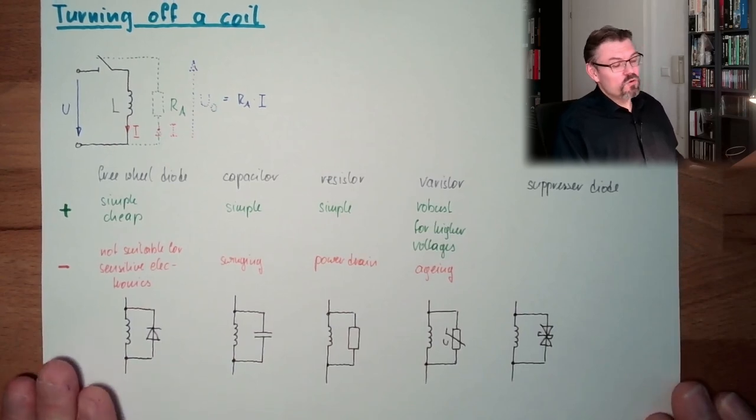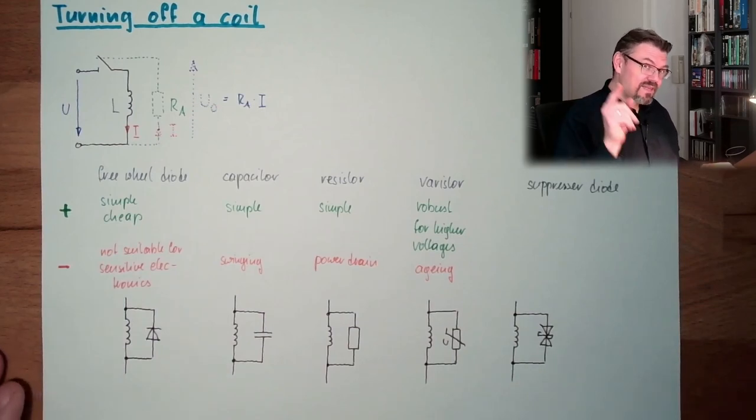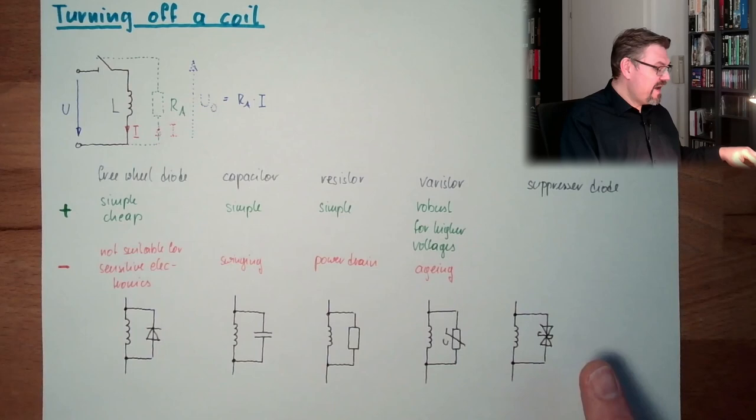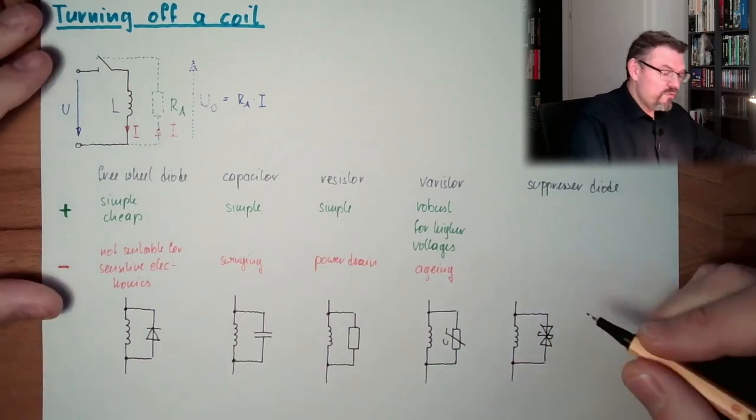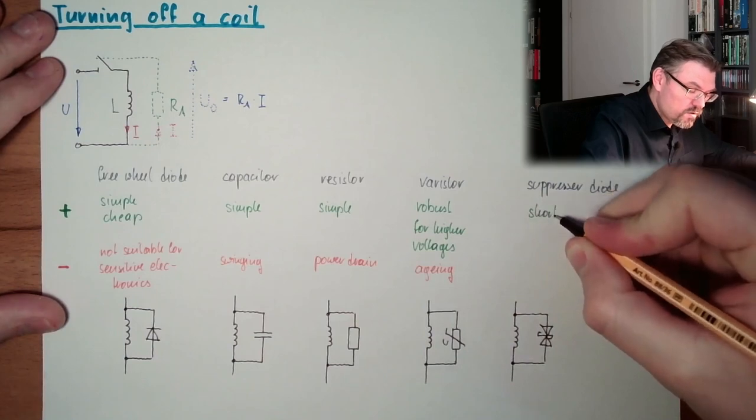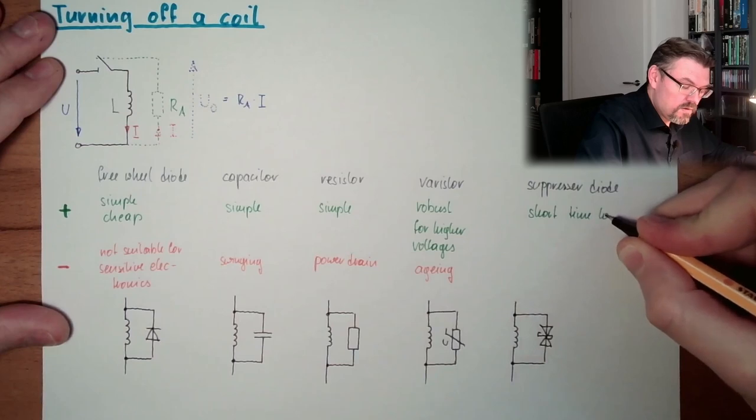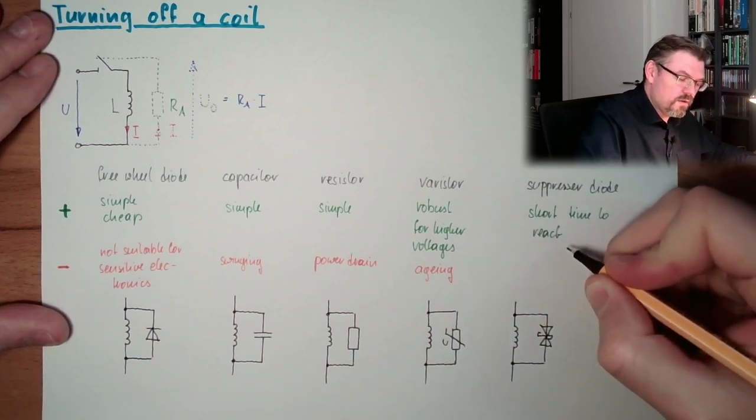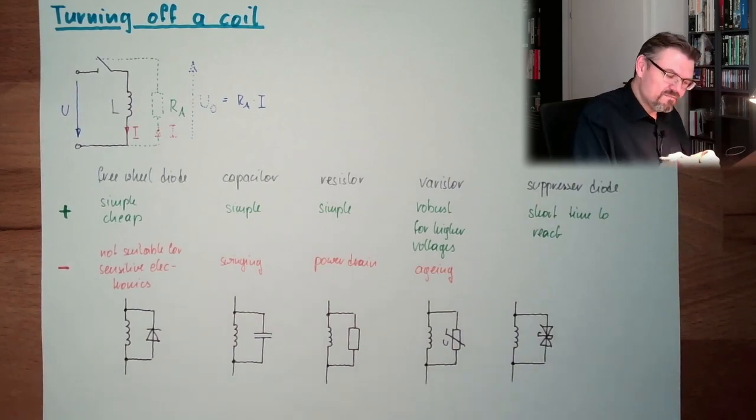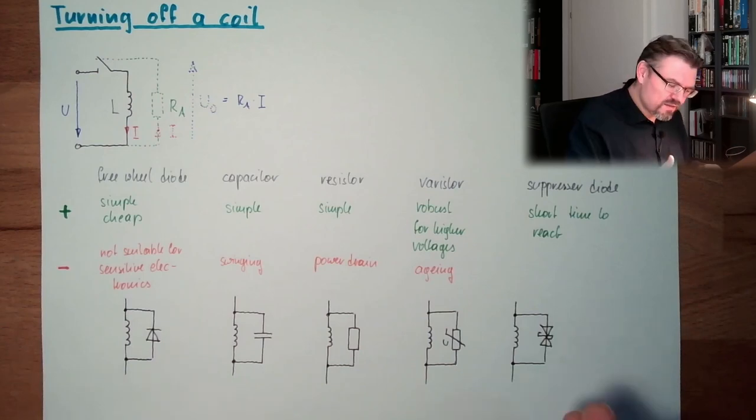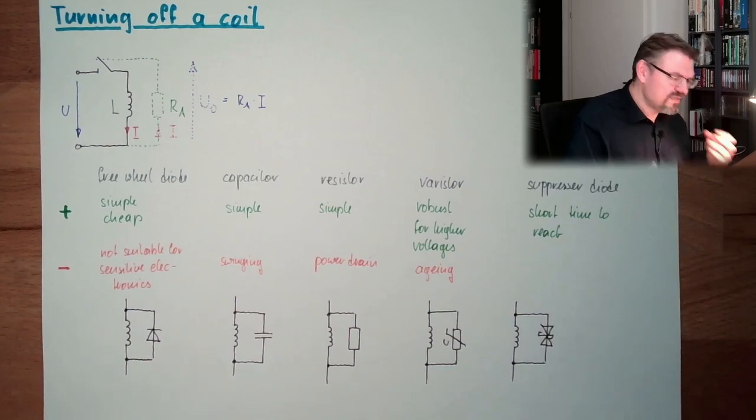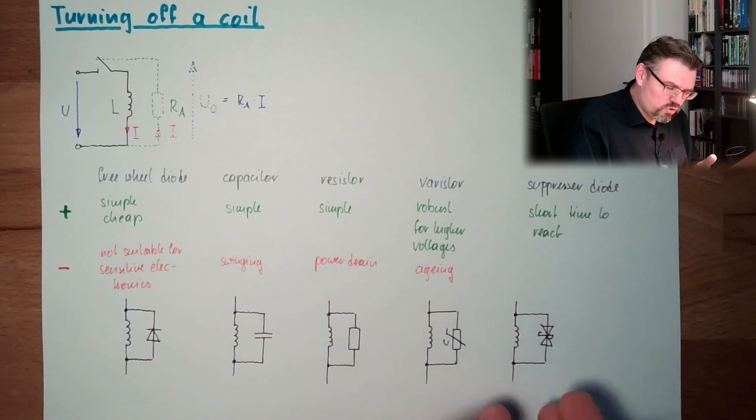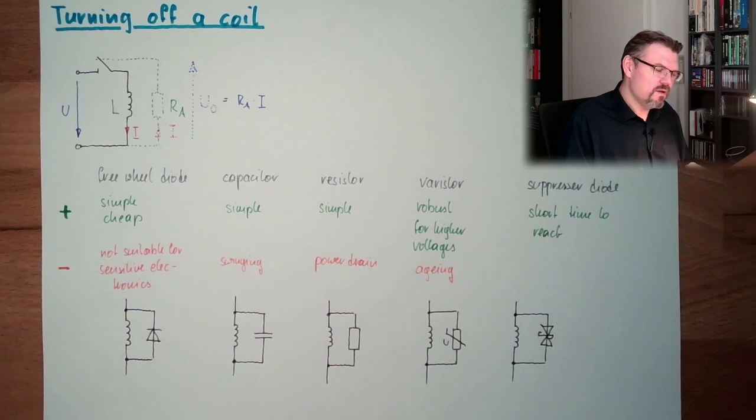So they developed a so-called suppressor diode. This is especially designed for exactly this purpose. Yeah, and compared to this variant, they have really short time to react. So they are really fast. They are really getting conductive. And so we are not getting the slightest peak. So those things are also able to protect sensitive electronics. They are... they can do everything. And if you have a perfect solution for something, what this solution usually is? The best solution is usually expensive.